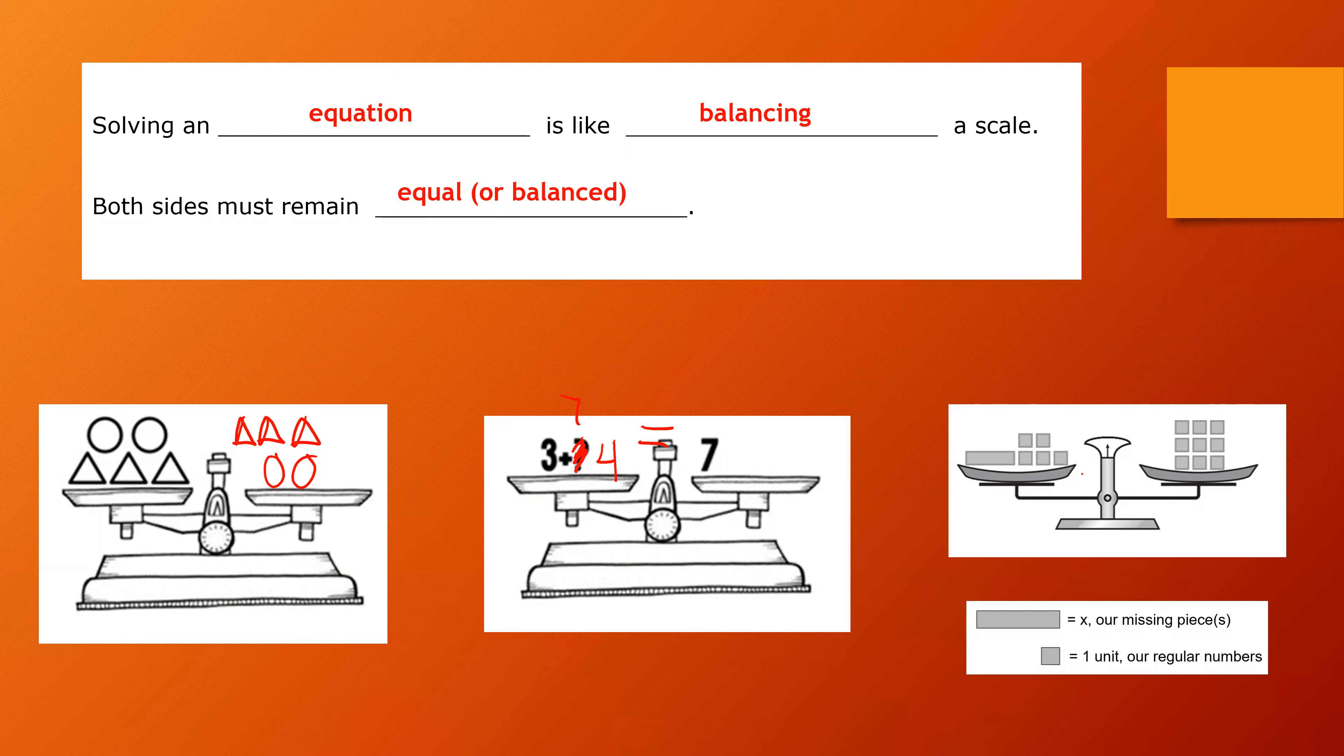The third one on here is more of what our models will look like. We can see down below the picture that we have these long skinny ones, and those are going to be our X, our variable, our missing pieces. That's what we're solving for. And then the little squares are one unit each. That's just our regular numbers.